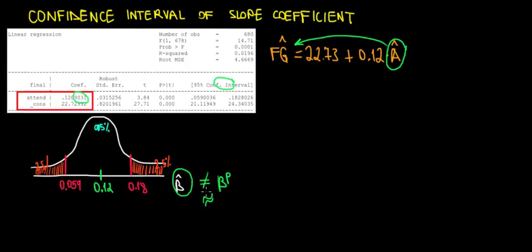Because this is an estimate, we would like to give a range of values that are going to include the population effect. So the 95% confidence interval is giving us the probability of 95% that in this range between 0.059 and 0.18, the true population effect is there. So the beta of the population is included in this range with a 95% probability.